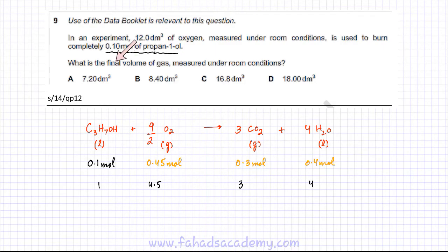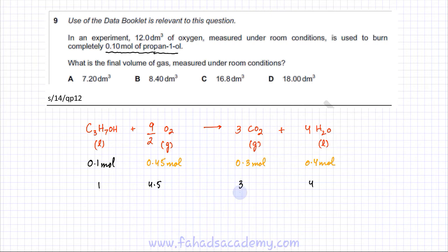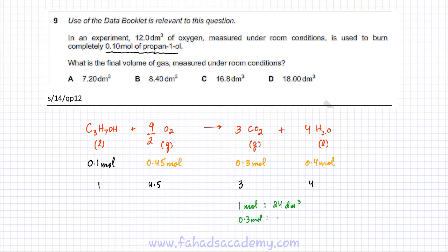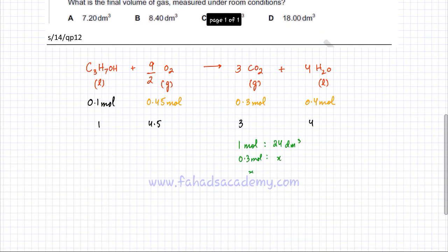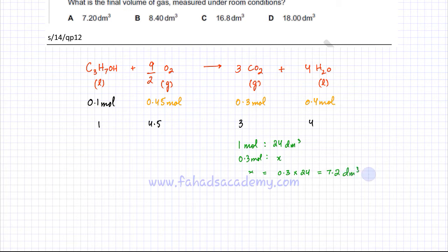The question wants the final volume of gas. In the products, only carbon dioxide is a gas — water is in liquid state. So we focus on CO2. Using the molar volume at RTP, one mole of gas occupies 24 dm³. So 0.3 moles of CO2 occupies 0.3 × 24 = 7.2 dm³ of CO2 gas.